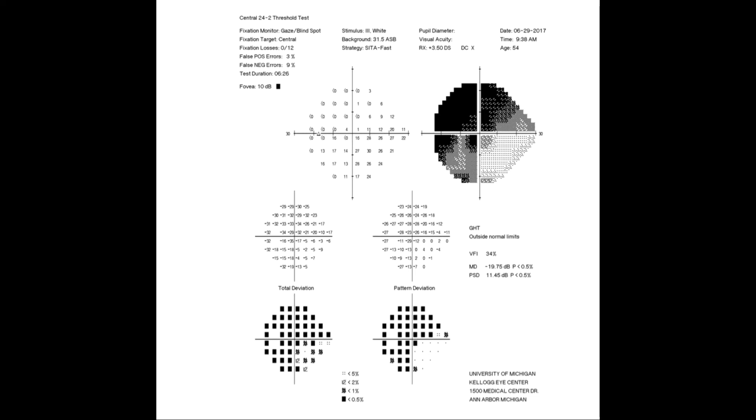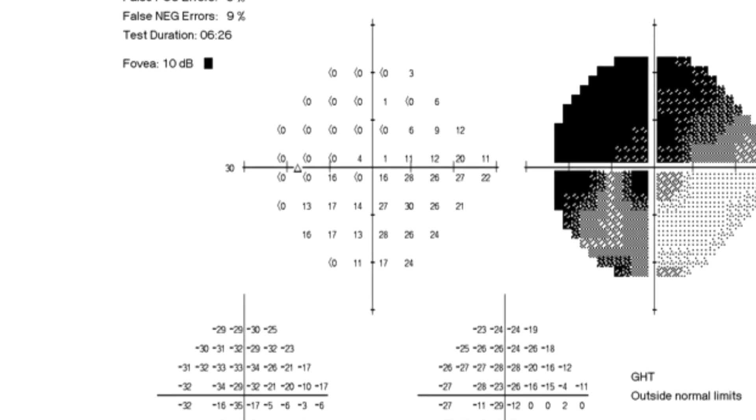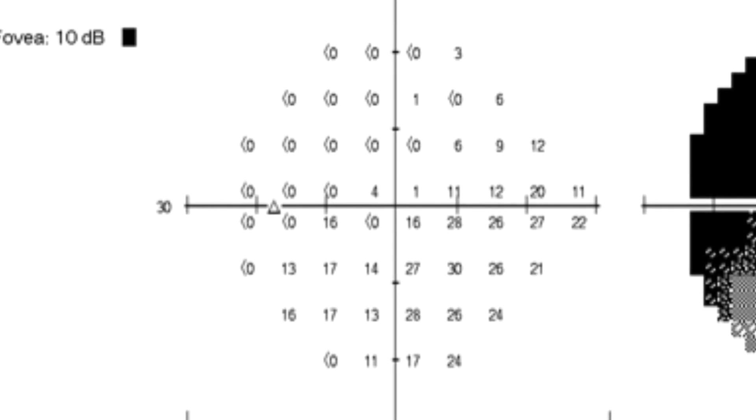The next step is to find out how severe these defects are. For that, you must look at the raw data, the visual detection thresholds at each test point. These numbers, expressed in decibels, represent how attenuated or dim the test spot could be and still be detected by the patient. The higher the number, the dimmer the test spot and the better the vision at that test point.